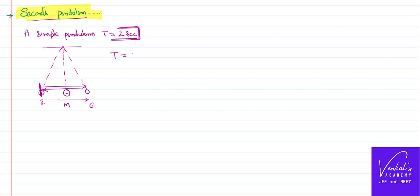So we have derived an expression for the time period of a simple pendulum as 2π times root of l by g. If it is a seconds pendulum, time period shall be equal to 2 seconds. Substitute here. What happens then? 2 equals 2π times root of l by g. 2 and 2 will get cancelled.